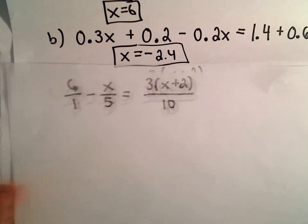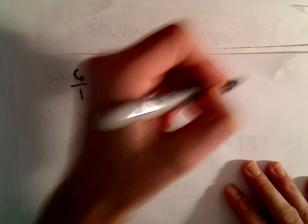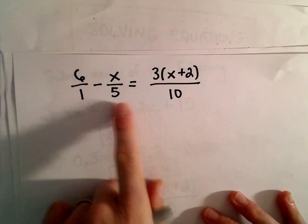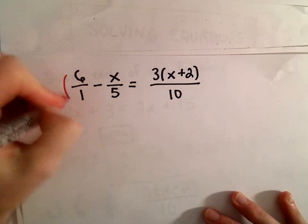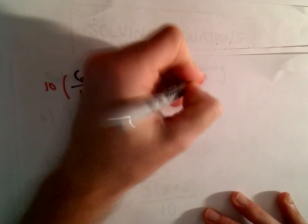In this case, if we think about the least common multiple of 1, 5, and 10, the least common multiple would be 10. So, what's the smallest number that's divisible by 10, 5, and 1? Well, I'm going to multiply both sides by that number, which is 10 in this case.